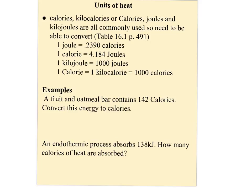A fruit and oatmeal bar contains 142 kilocalories. Convert this energy to calories. I'll write this as 142 kilocalories and set up a conversion factor. I want calories, and I have kilocalories. There are a thousand calories in a kilocalorie, so this is going to be 142,000 calories.